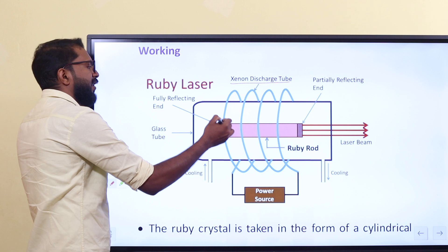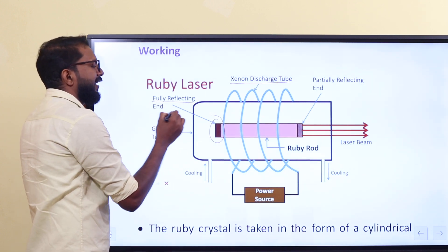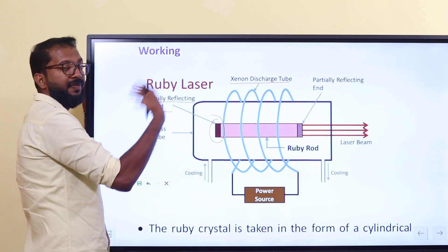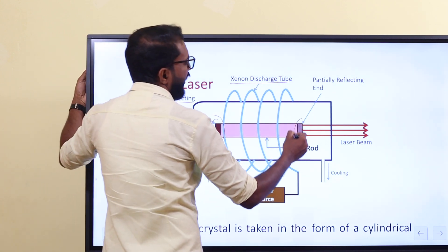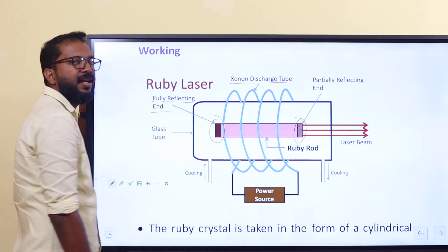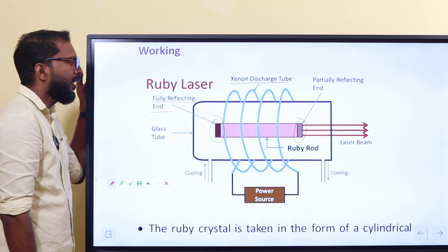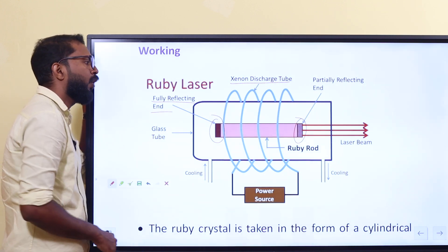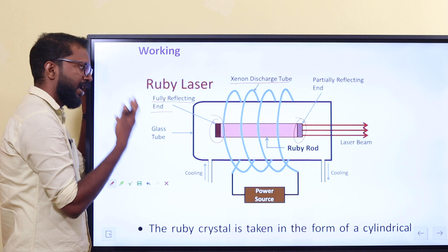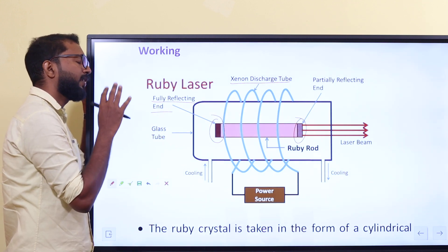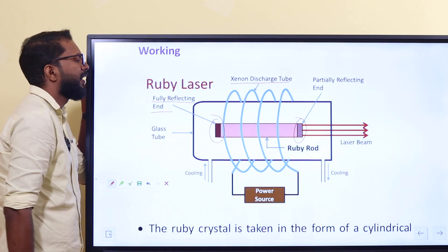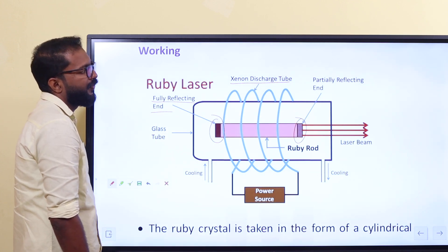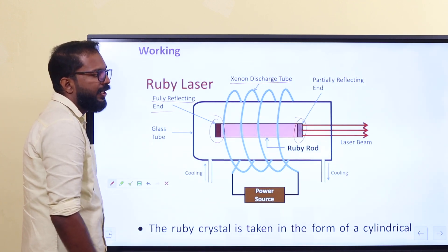One end has a fully reflecting mirror, and the other end has a partially reflecting mirror. This structure has a xenon lamp, a ruby rod, and a glass tube. One end of the glass tube is fully reflecting and the other is partially reflecting.